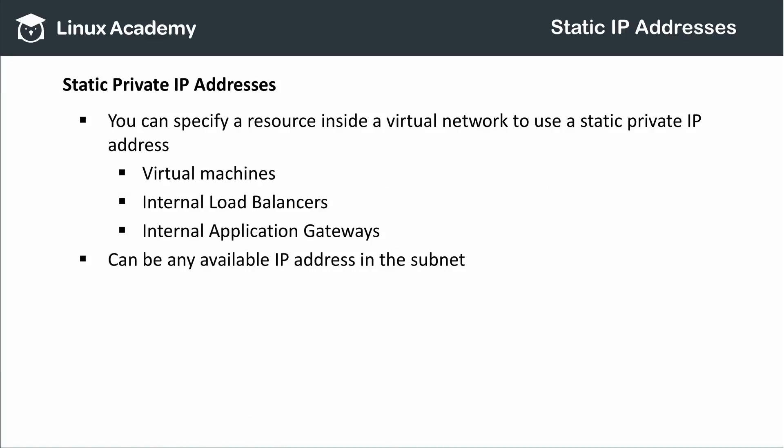Fortunately, we can assign static private IP addresses in Azure too. Virtual machines, internal load balancers, and internal application gateways can all be assigned to a specific IP address from the subnet in which they live, and you can specify this address to be any available address within the subnet.